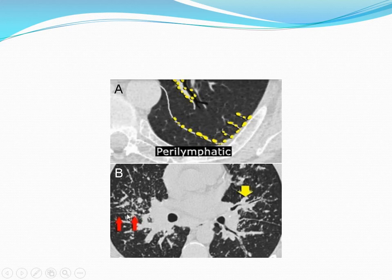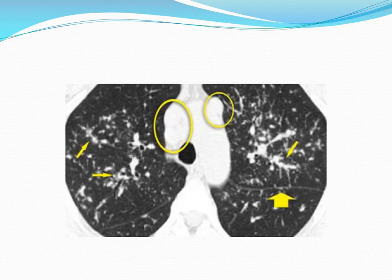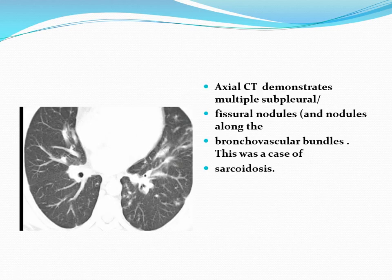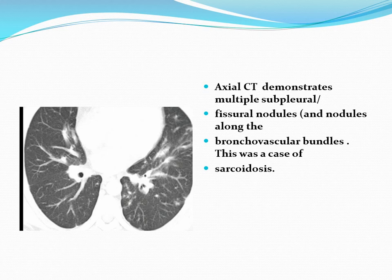On this image you can see multiple small nodules within the fissure and within the bronchovascular bundles. There is also bulging or enlarged lymph nodes. This was a typical case of sarcoidosis. Axial CT demonstrates multiple sub-pleural and bronchovascular bundle nodules — reaching the pleura, which is consistent with lymphatic distribution. In this case, it is sarcoidosis.